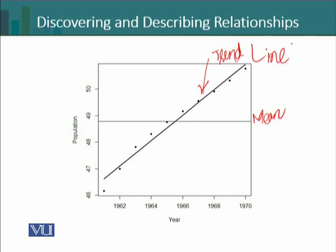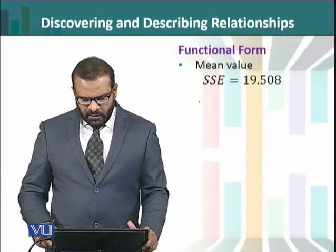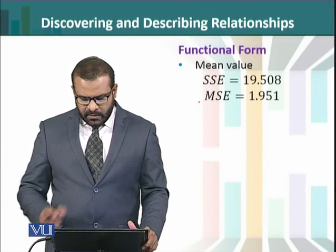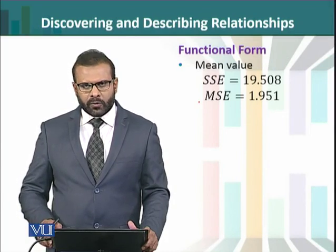It can be easily observed that errors for the mean values are quite large, while the errors for the trend line are relatively smaller. Most of the points are actually around the trend line, which graphically shows that the trend line is providing a better estimate for this population compared to the single mean value. So the functional form is in this case better than the mean value.